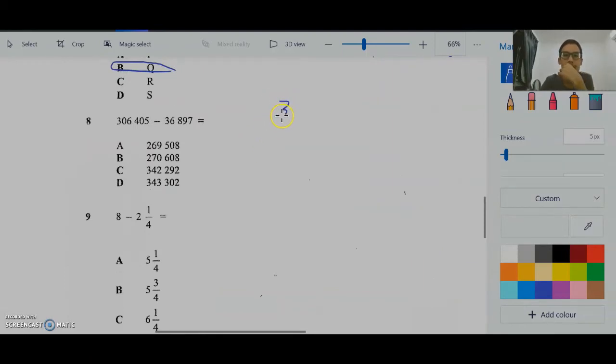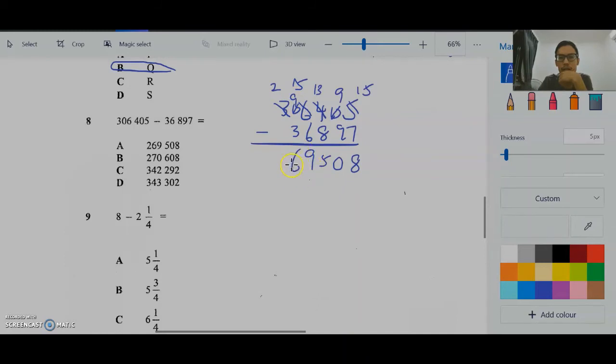Yang ini tolak. Ini tambah 10. Yang ini tolak 1. Yang ini dapat 9. Tolak, tolak. Tambah 10, tolak 1. Tolak. Tambah 10, tolak 1. Yang tengah kosong tengah dapat 9. Tolak, tolak, tolak. So, the answer is A.